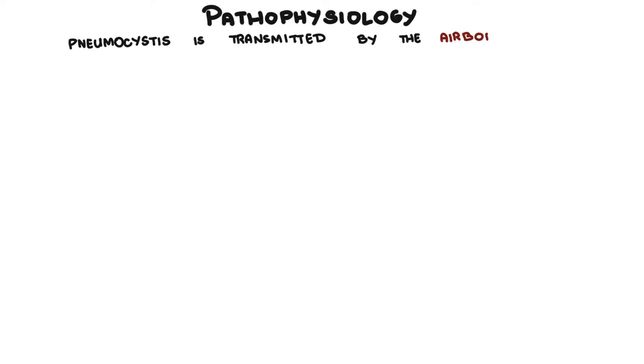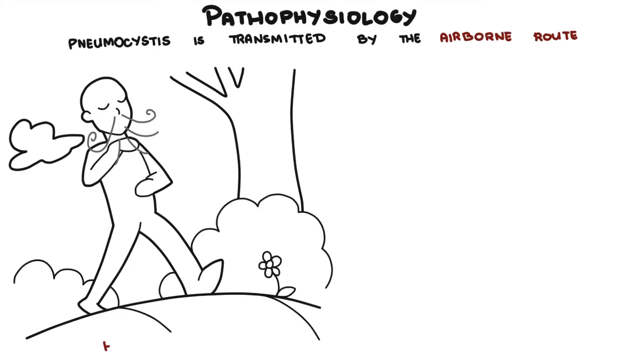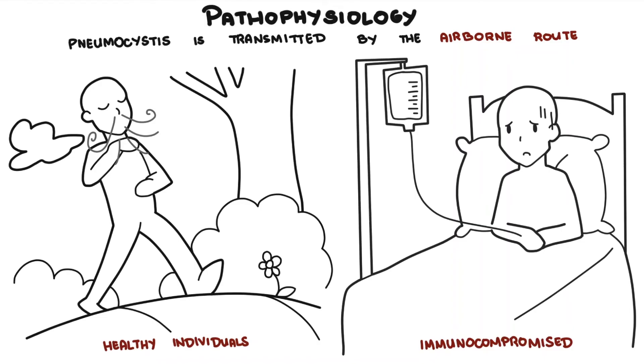Let's talk about the pathophysiology of Pneumocystis pneumonia. Pneumocystis is transmitted by the airborne route. In healthy individuals, Pneumocystis can colonize the lung and cause no problems. However, if a patient becomes immunocompromised — meaning they have a weak immune system — Pneumocystis can lead to a terrible lung infection.